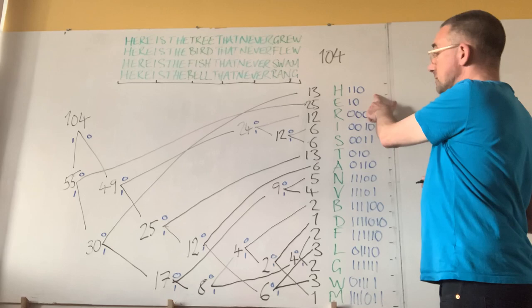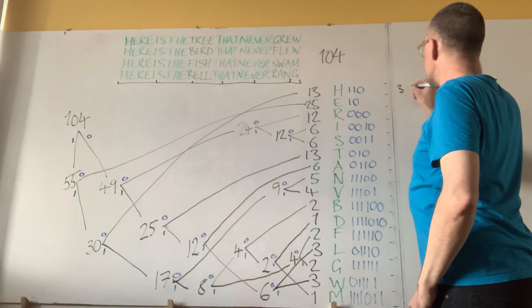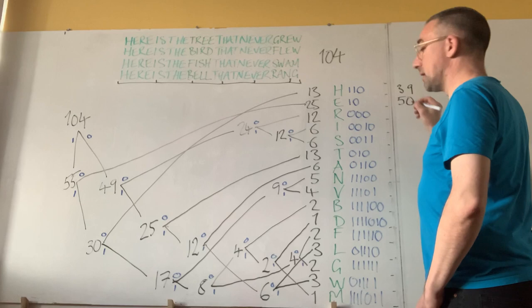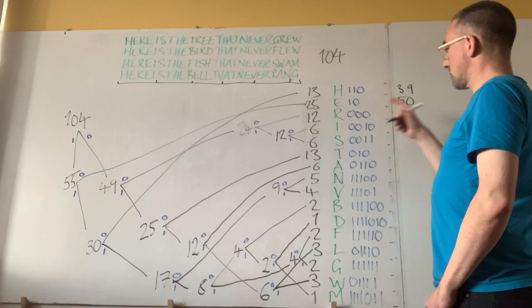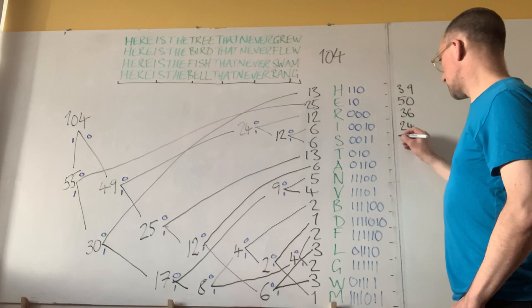One way to do it is to look at the codes, measure their length, and then multiply them by the number of times they're used. So we've got a code for H of length 3, and we've got 13 Hs. That's going to contribute 39 bits to the message. And our nice short code for E is only length 2. That's used 25 times, so we get 50 bits in the message devoted to encoding E. For I, we've got 3 bits in the code, so 36 bits spent in coding R. We've got 24 bits in coding I, and another 24 for S.